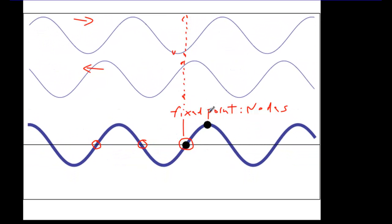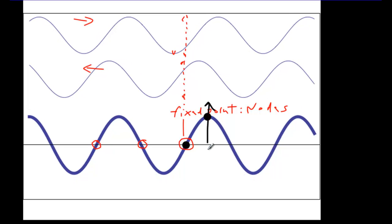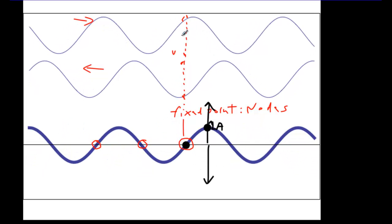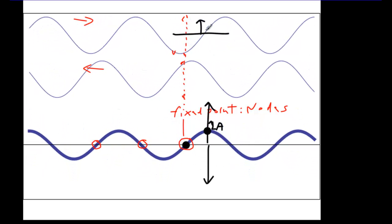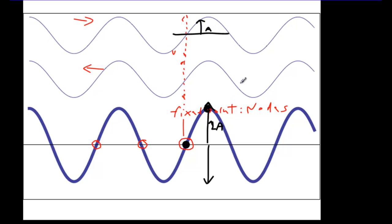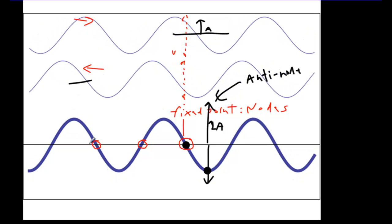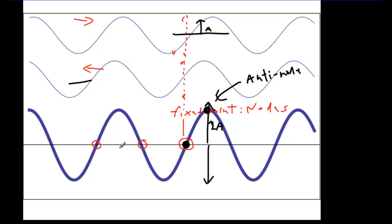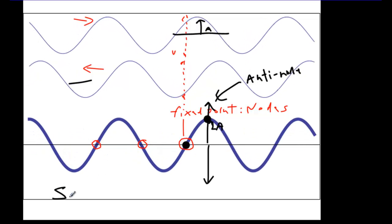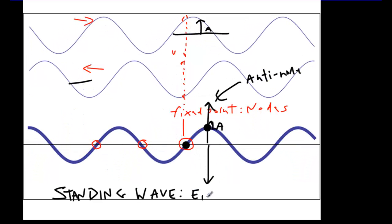This point here has a maximum oscillation. It's oscillating with an amplitude of 2a, twice the amplitude that we have up here for either one of these waves. We call this part an anti-node. Notice that, whereas the crests are moving along up here for the individual waves, we don't have any crests moving along down here. There's no movement of crests. So the energy is standing still. We call this a standing wave, also called a stationary wave, because the energy does not propagate.